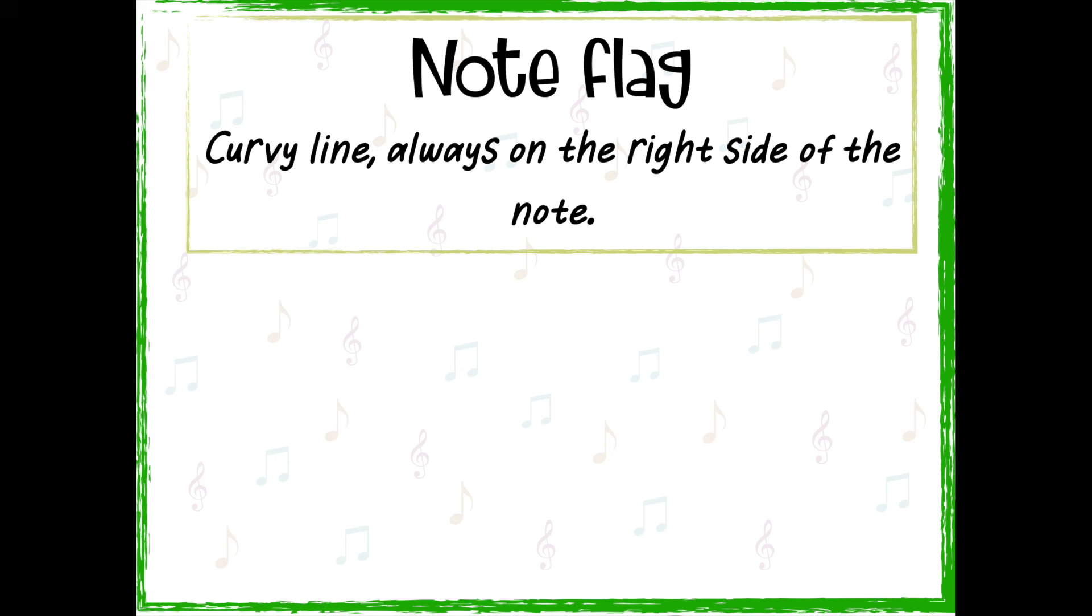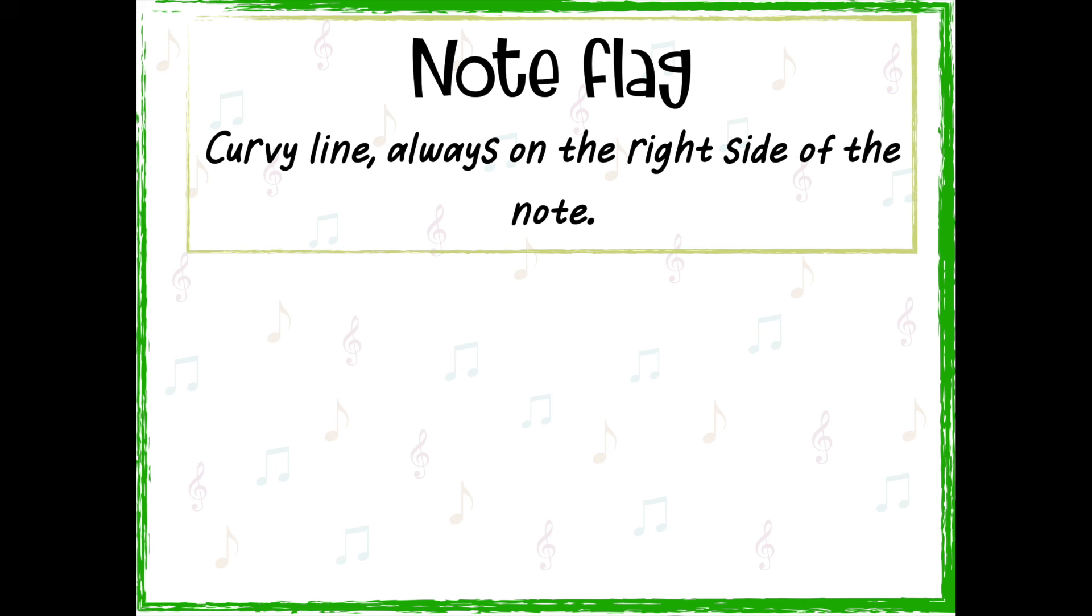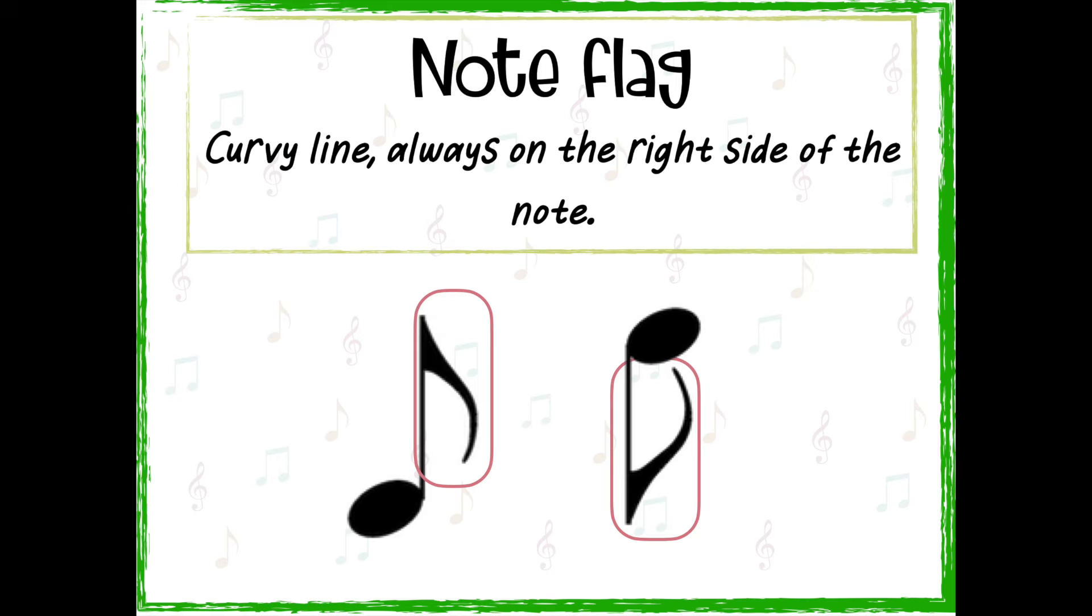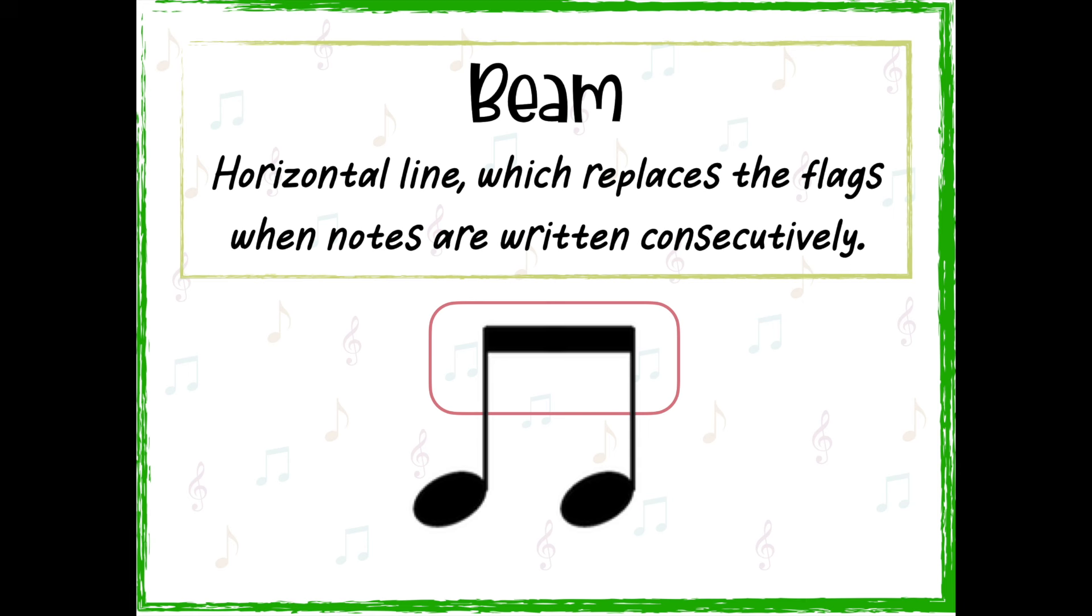A note flag is a curvy line which is always indicated on the right side of the note. A beam is a horizontal line which replaces the flags. This happens when two or more notes with the flag are written consecutively in the music.